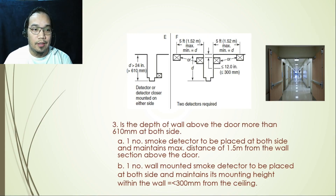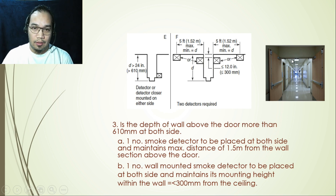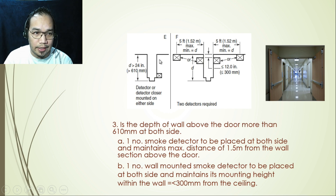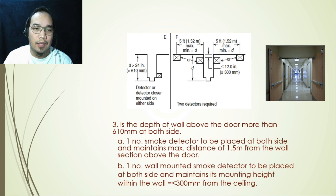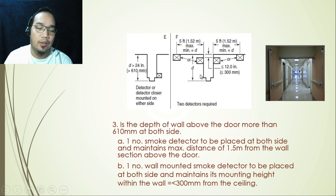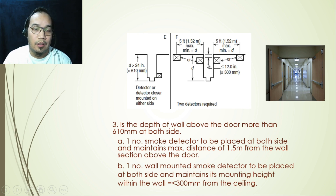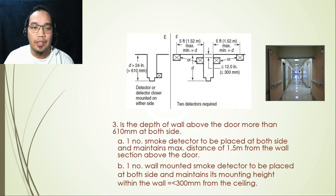The third case is when the depth of the wall above the door is more than 610 mm on both sides. As shown in this illustration, both sides exceed 610 mm. In this situation, there is no option to provide only one detector — two detectors are mandatory, one on each side. For ceiling-mounted detectors, maintain 1.5 meters from the wall above the door; for wall-mounted detectors, maintain a maximum distance of 300 mm or less from the ceiling.